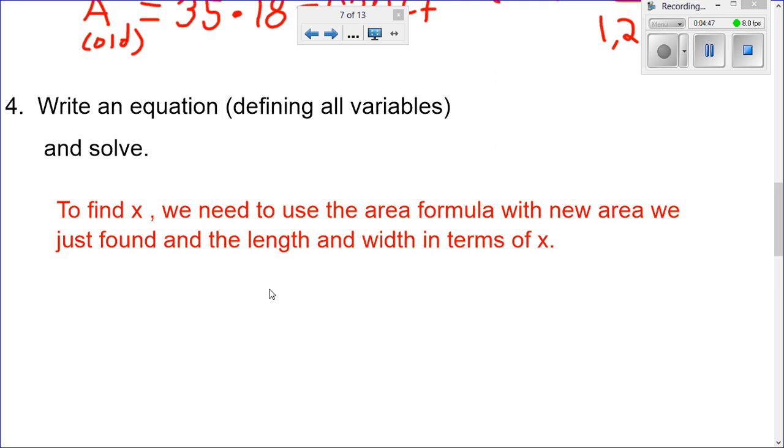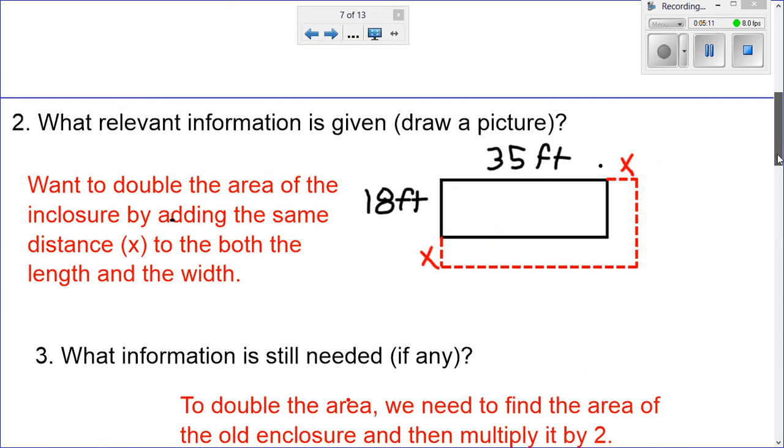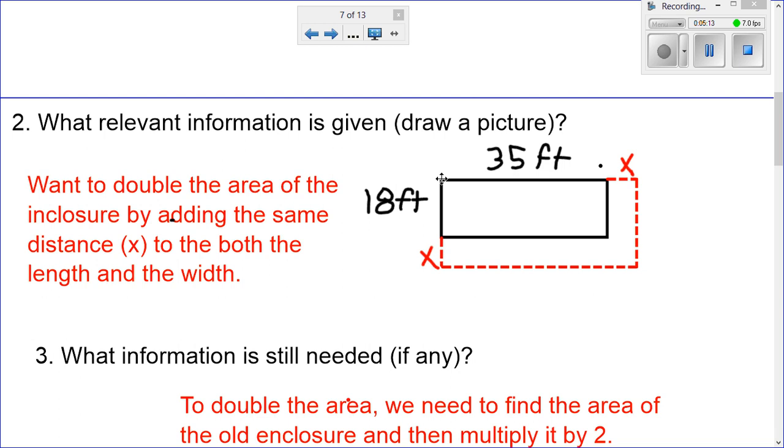Okay, to find x, we need to use the area formula, which is the new area we just found, and the length and width in terms of x. So, one more time. If we want to find x, we need to use the area formula with the new area, which is double of the old. That's what we just found, and then we need to write the length and width in terms of x. So, if I go back to my diagram, my old length is 35. My new length in terms of x would be 35 plus this piece here, x. 35 plus x.